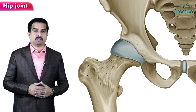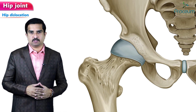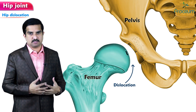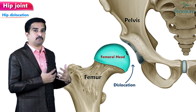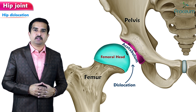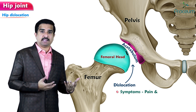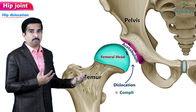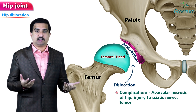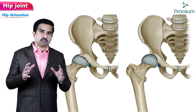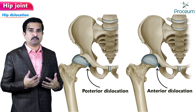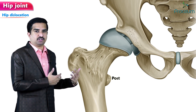Now let us discuss the clinical anatomy of the hip joint, starting with hip dislocation. A hip dislocation is a disruption of the joint between the femur and the pelvis — specifically when the ball-shaped head of the femur comes out of the cup-shaped acetabulum. Symptoms typically include pain and inability to move the hip. Complications may include avascular necrosis, injury to the sciatic or femoral nerve, or arthritis. Dislocations are categorized as either posterior or anterior based on the location of the femoral head.